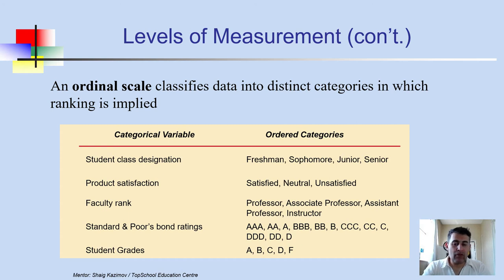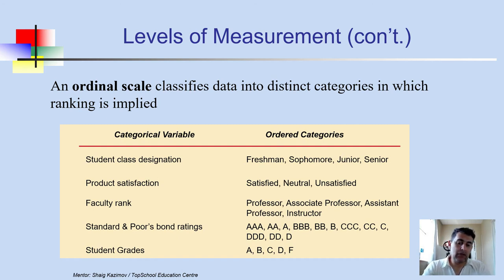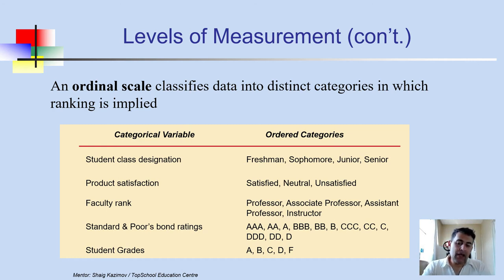Other ordinal examples include faculty rank (professor, associate professor, assistant professor, instructor) and bond ratings. Governments sell and buy bonds as part of fiscal policy, and these have ratings — triple-A is a very good, liquid bond rating, while lower ratings go down through B categories. Student grades are also ordinal — the best level is A, and they rank downward from there.